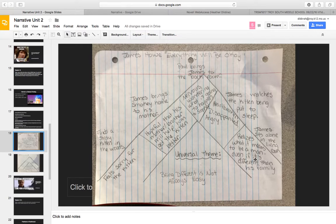Once again, all of these point to that universal theme. The universal theme in Everything Will Be Okay by James Howe was 'being different is not always easy,' and he realizes that at the very end.